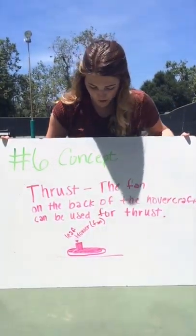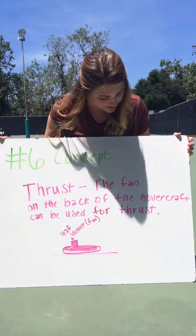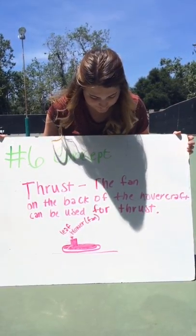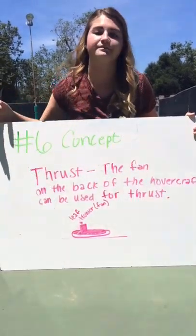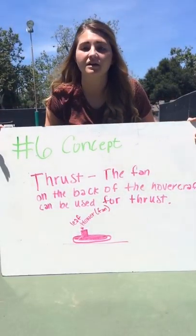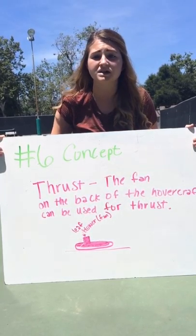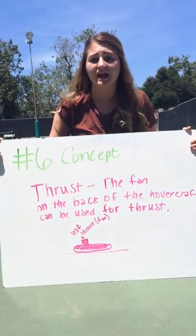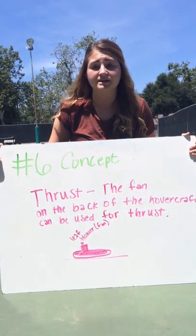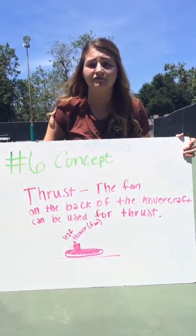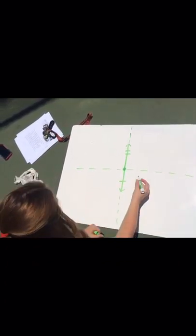For concept six, we are using thrust. The fan on the back of the hovercraft can be used for thrust. This is the leaf blower, or fan. The fan on the back of the craft displaces the air, meaning the craft moves forward. This is because of Newton's third law, which states that for every action there is an equal and opposite reaction. The fan forces air to push behind, propelling the craft forward.